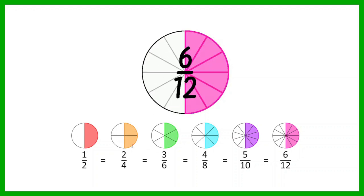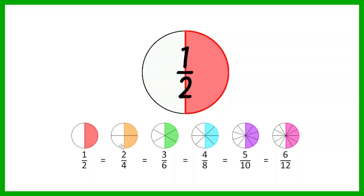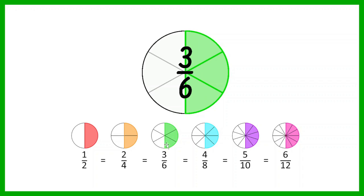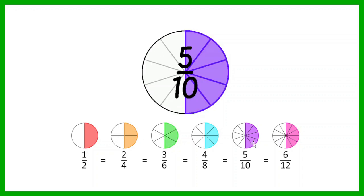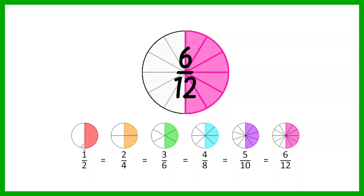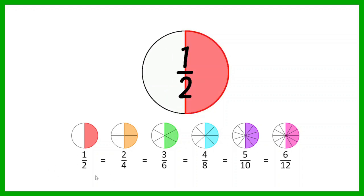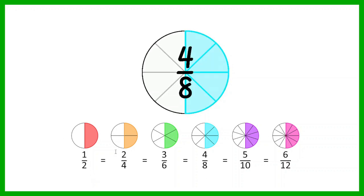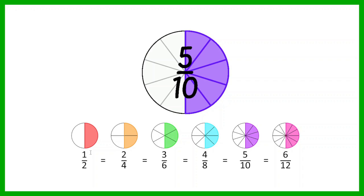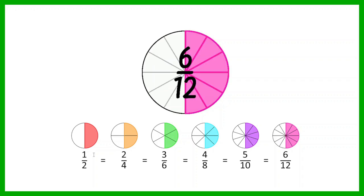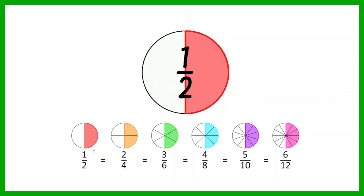Even though in this one the circle's been divided into four pieces and two of those pieces have been colored in, here it's been divided into six pieces and three of those pieces have been colored in — it still comes to half of the circle that's been colored in. They are all equal to a half, they are all equivalent to each other. So even though they look different, they do still mean the same.